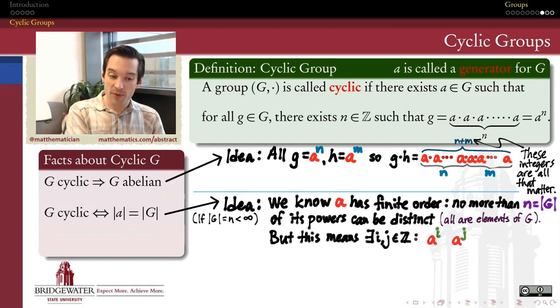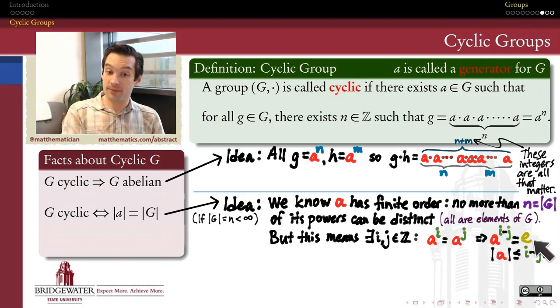But then that means there must be at least two powers of A that are equal to one another - two distinct powers. Let's call them A to the power i, A to the power j. If the i-th power of A and the j-th power of A are the same, then multiplying both sides by A to the minus j, I find that the i minus j-th power of A is the identity element. So there exists some power of my generator that turns it back into the identity. That means A must have finite order.